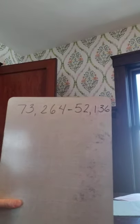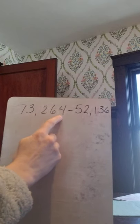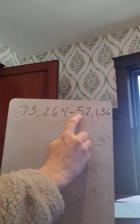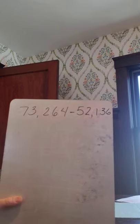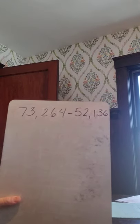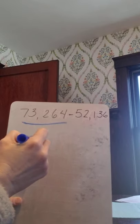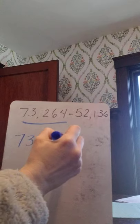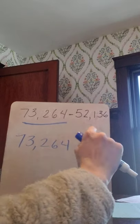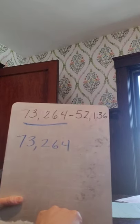Hi! This video is subtraction with multi-digit numbers. Hope you enjoy. Let's get set up. So this is my problem. 73,264 take away 52,136. Just like I did with addition, I'm going to take my first number and I'm going to rewrite it because I do not want my numbers going horizontally. I want them vertical. It's just that much easier.